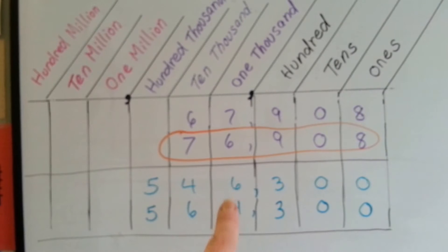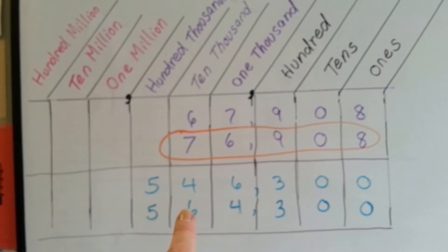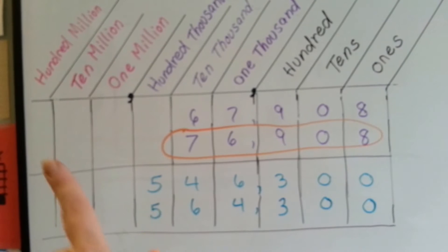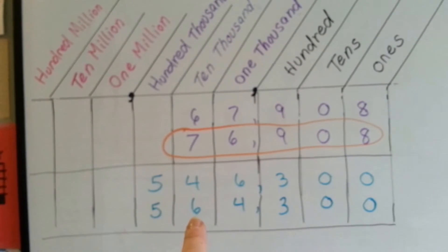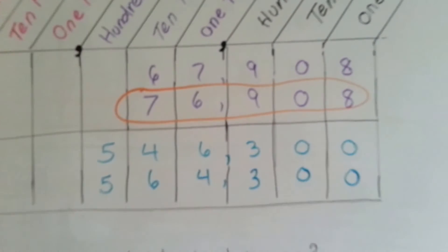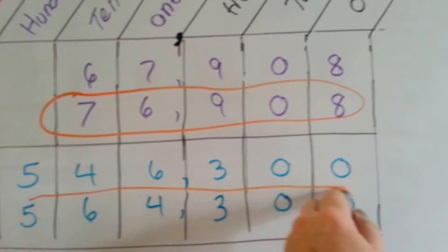This one has 6 1,000th and this one only has 4. But, as I said before, the more you go to the left, the more value it has. This one only has 4 in the 10,000th place. This one has 6. So if you said the second one, then you're right. This one is bigger.